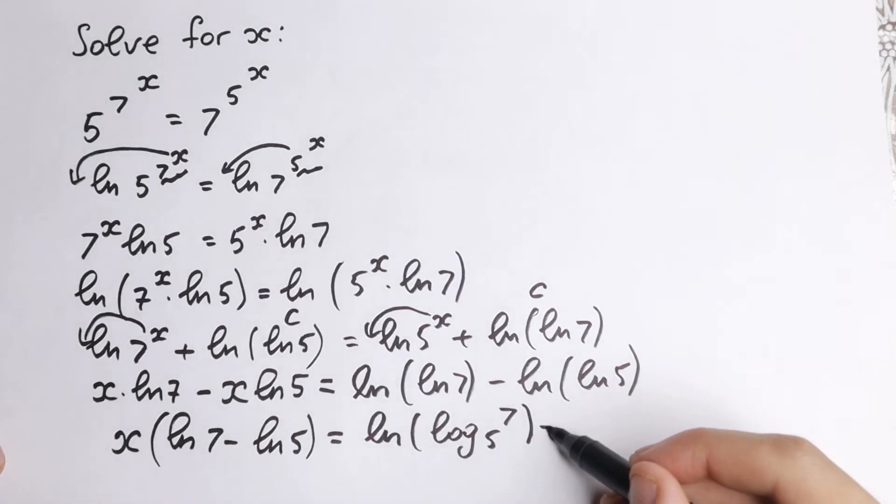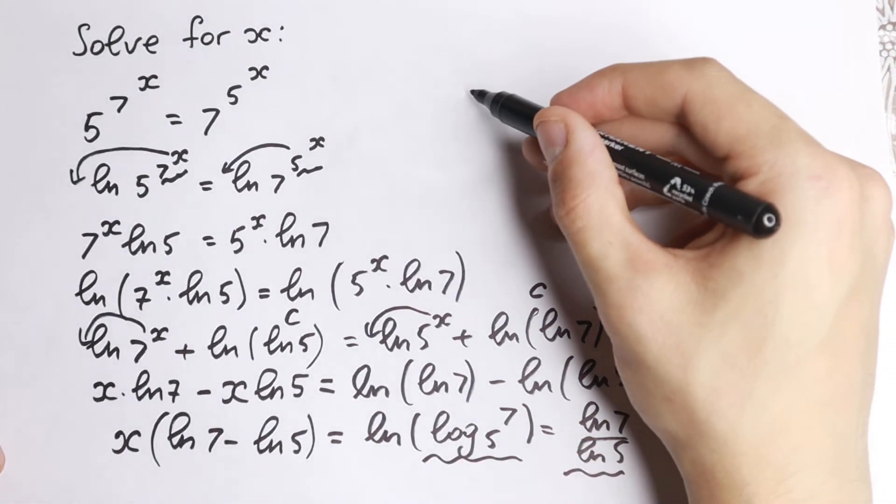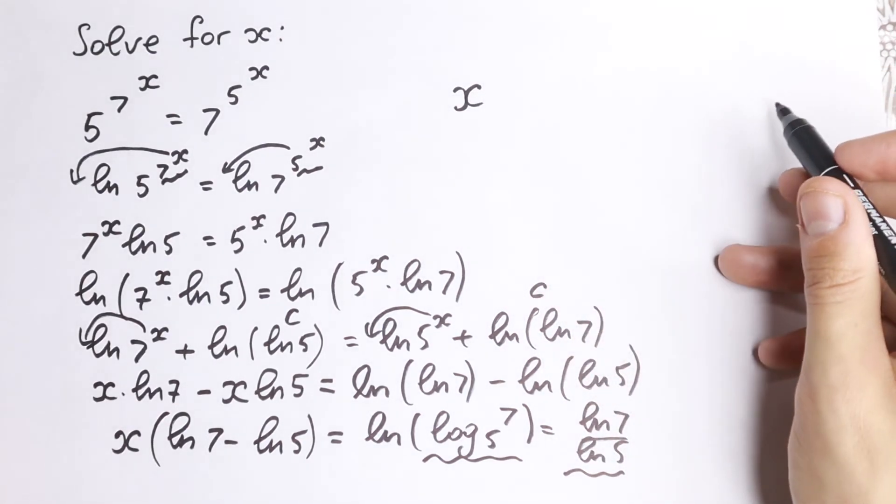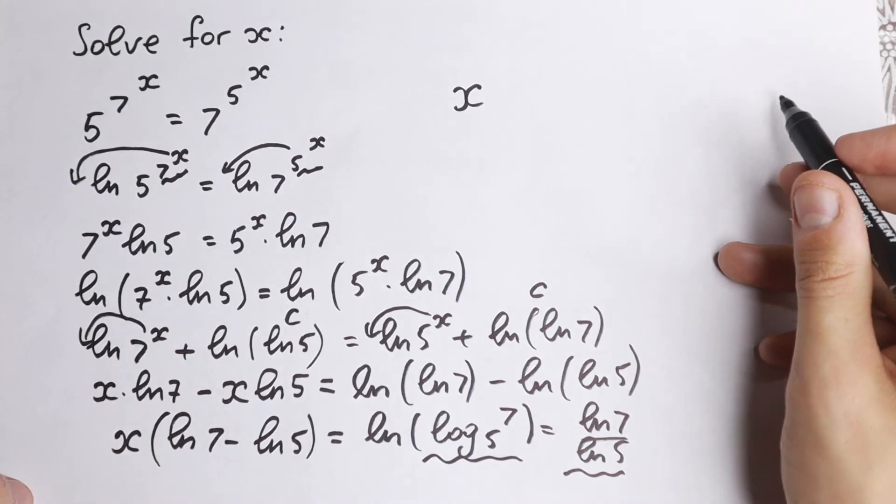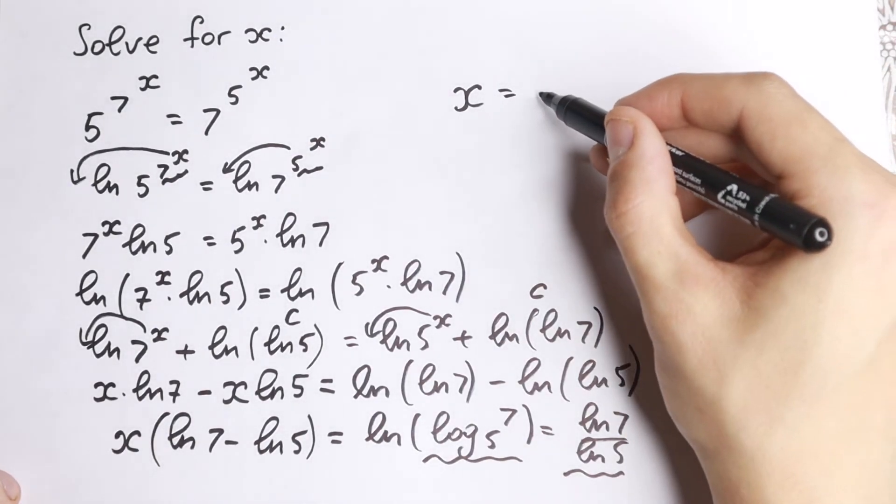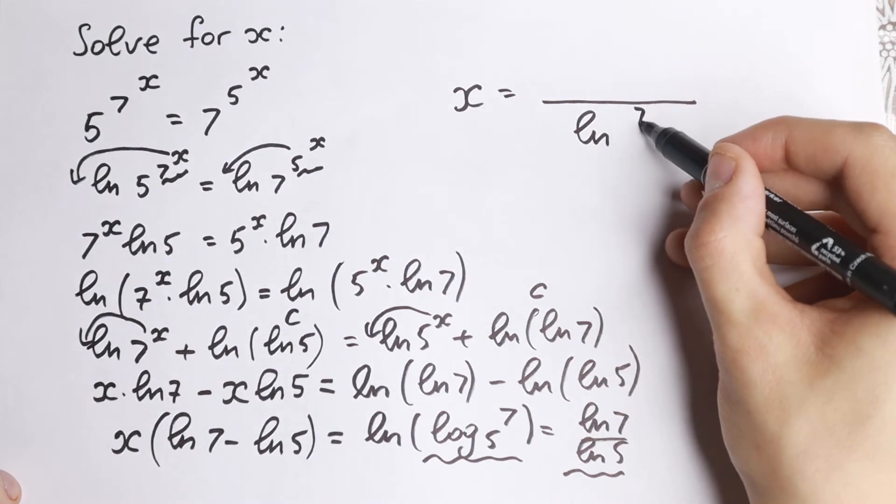Or in the same way, we can write it as natural log 7 over natural log 5. Both ways. We can write it in both ways right here. So this one can be written as this one. So it doesn't matter for us. We can write our answer x from here, dividing by this expression on the left. Because we don't need it, this is a constant. So this goes to our denominator.